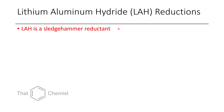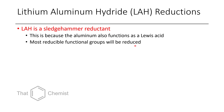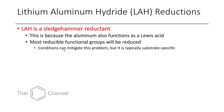Now let's talk about lithium aluminum hydride, sometimes written as LAH rather than LiAlH4. It's quite a powerful reductant because aluminum is a very strong Lewis acid. So most of the time, if you have a functional group that can be reduced, it likely will be. You can mitigate this by using shorter reaction times, milder conditions, more dilute solutions, or fewer equivalents, but this is typically substrate-specific. However, alkenes typically won't be reduced by lithium aluminum hydride.